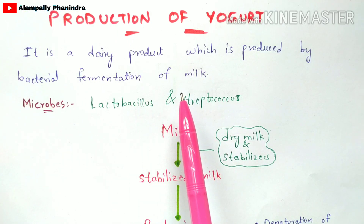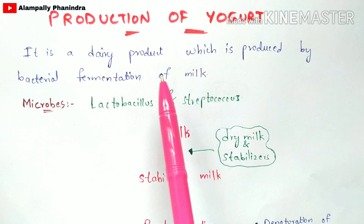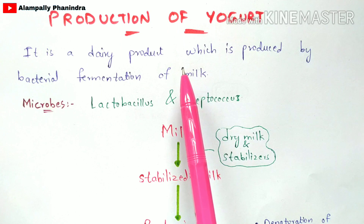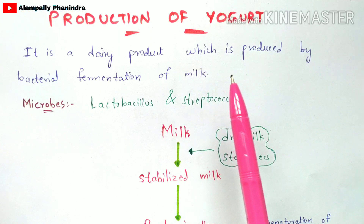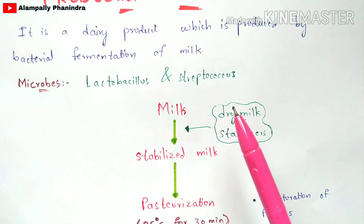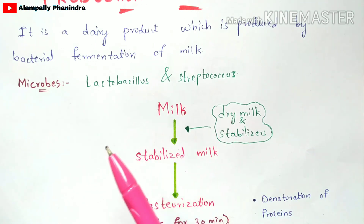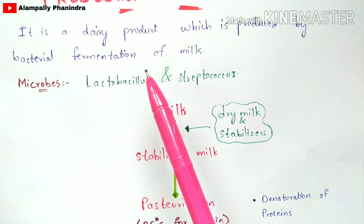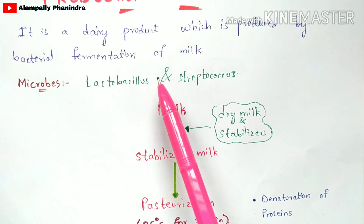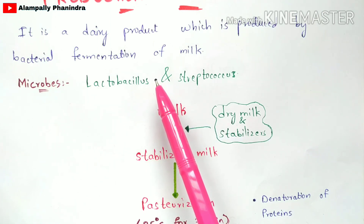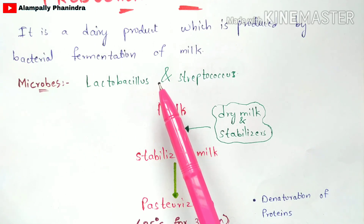How can yogurt be prepared using Lactobacillus and Streptococcus? The process used is fermentation. There will be fermentation tanks in the industries, and by using these fermentation tanks we are going to produce yogurt. The raw product mainly required is milk — without milk there is no production of yogurt. The actual aim of fermentation is that it helps in converting primary metabolites to secondary metabolites.